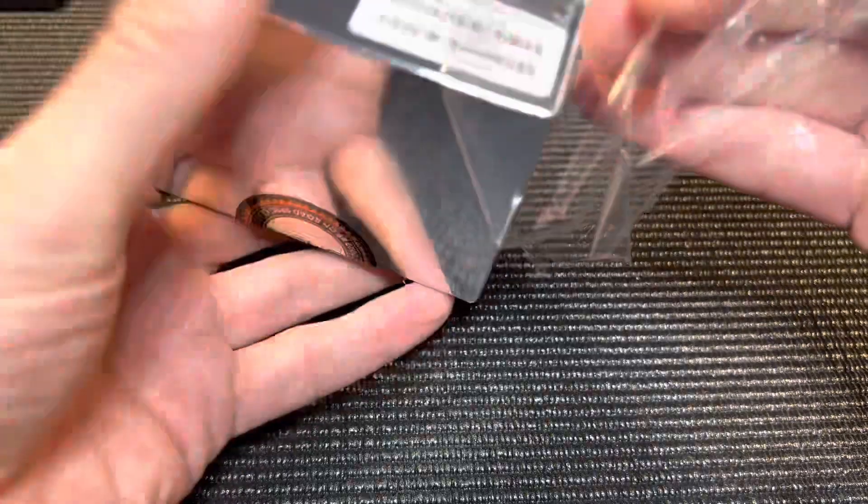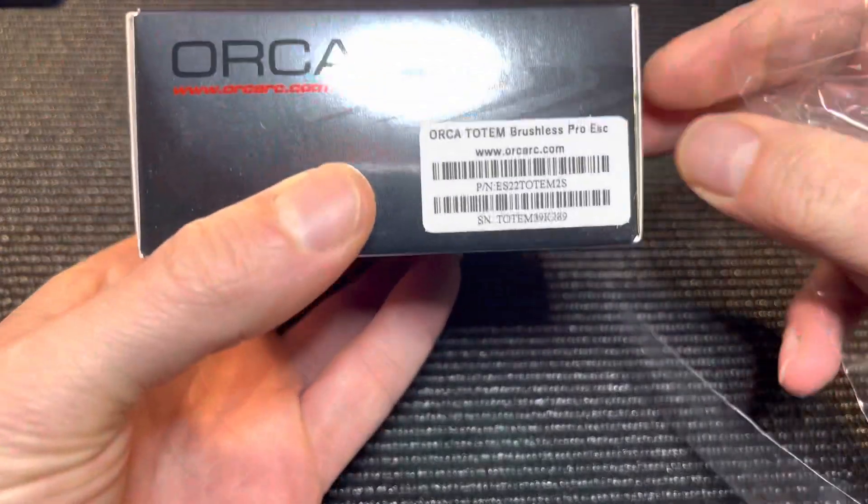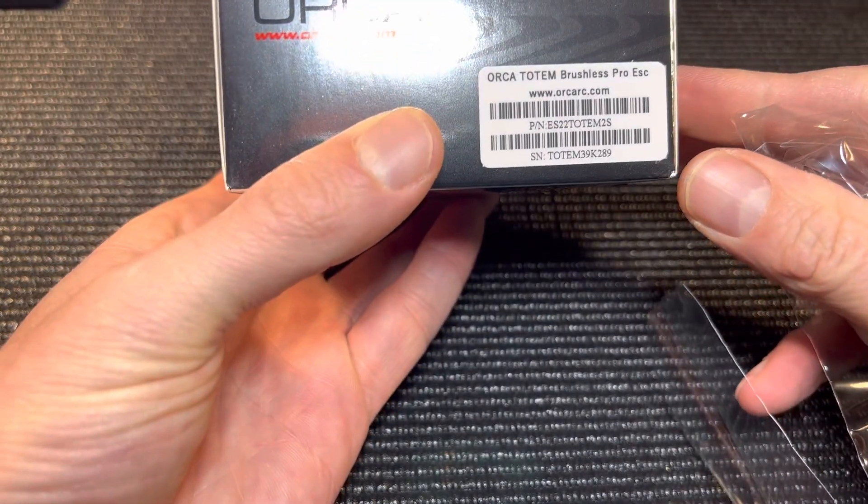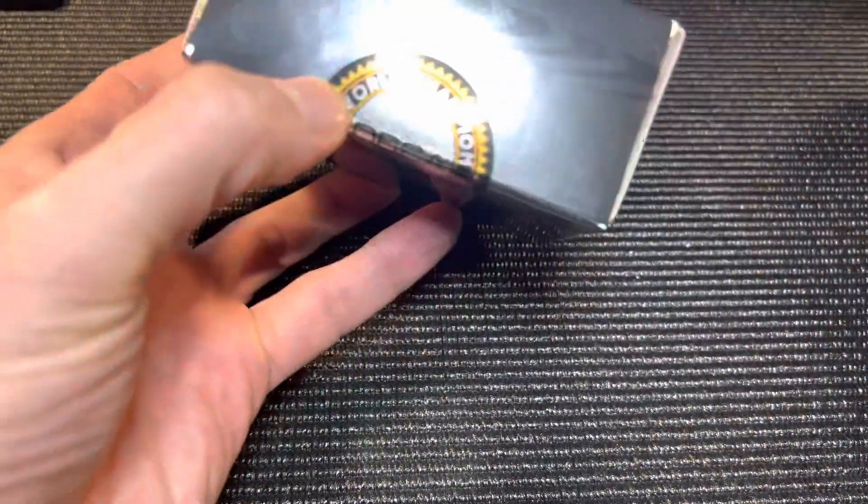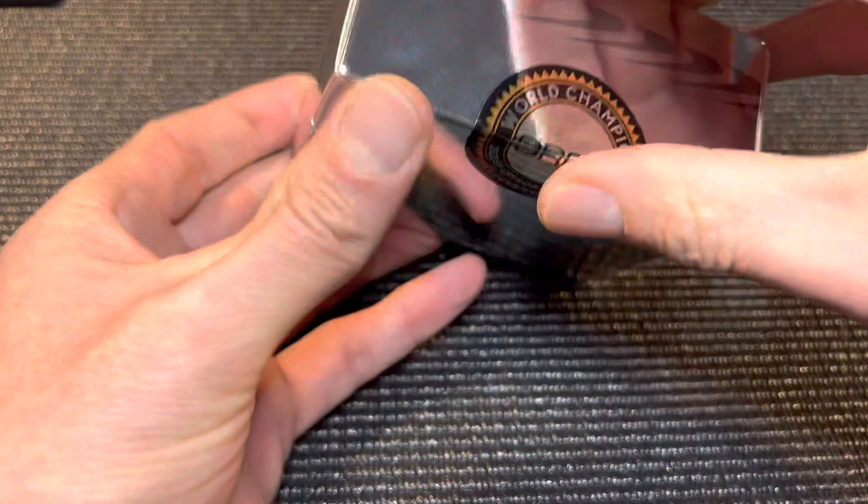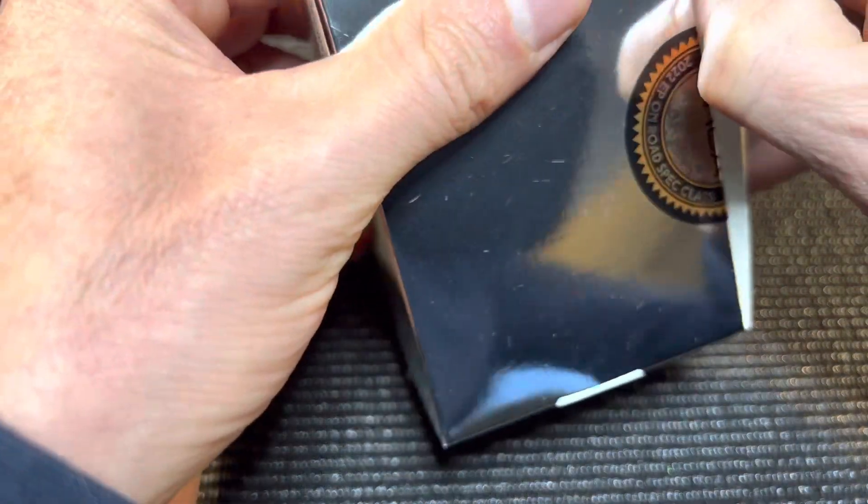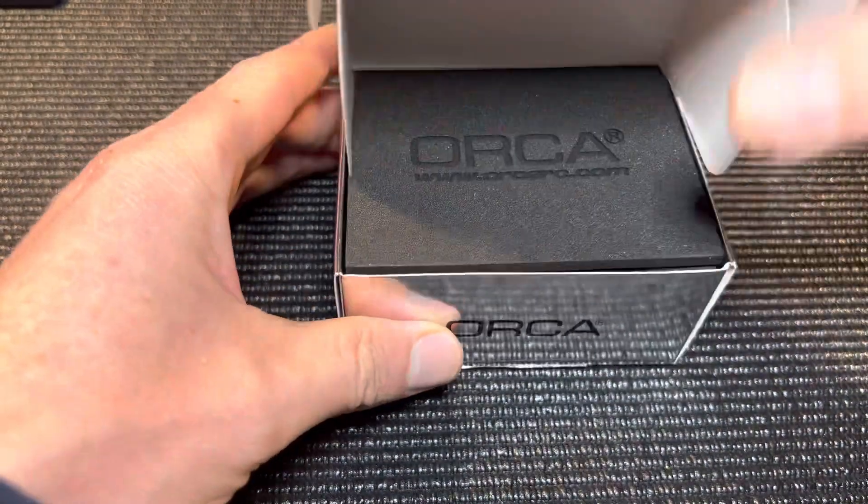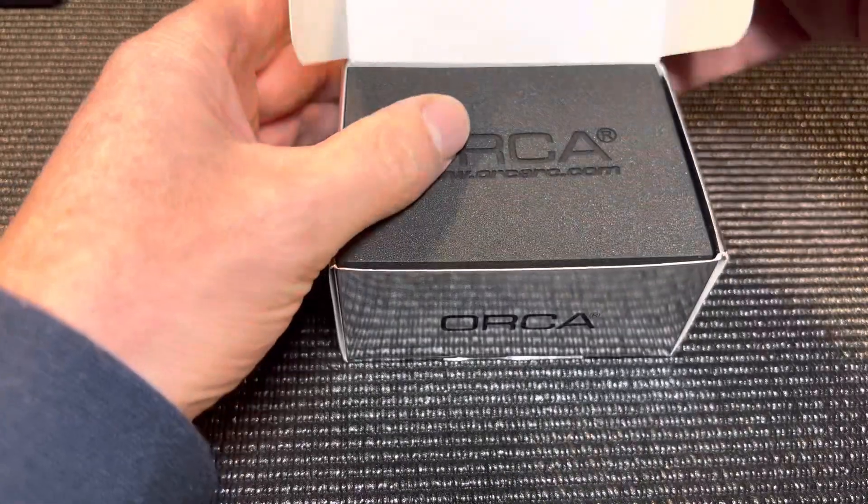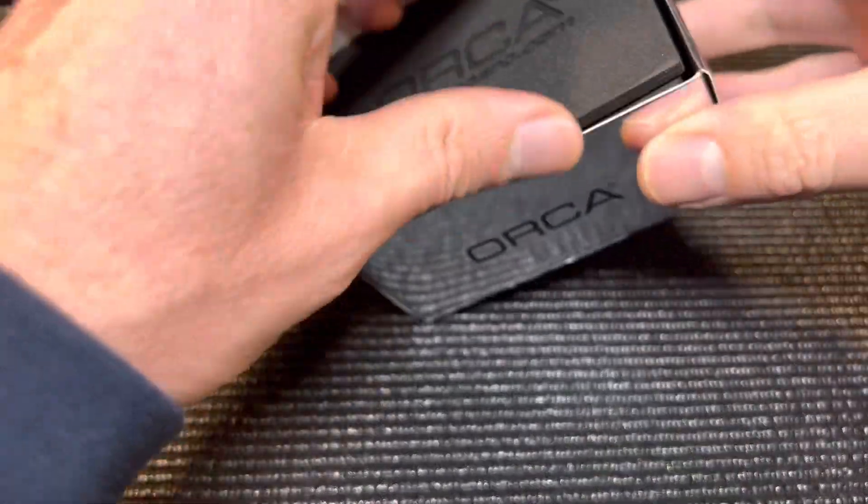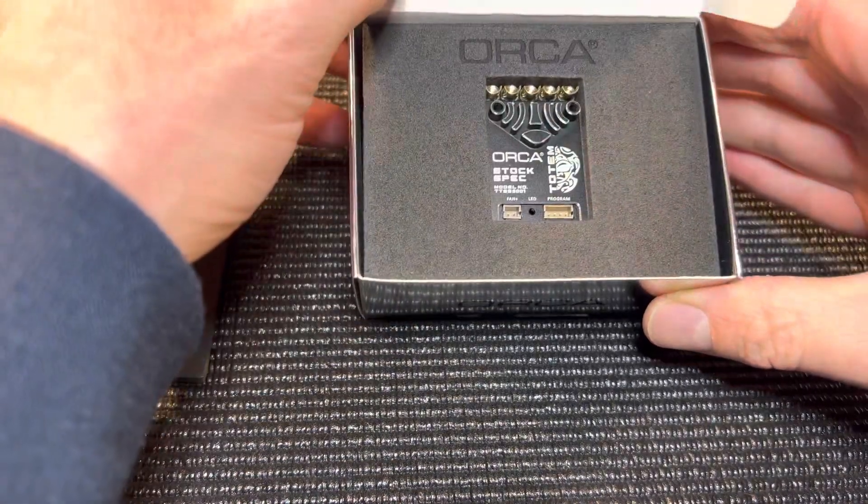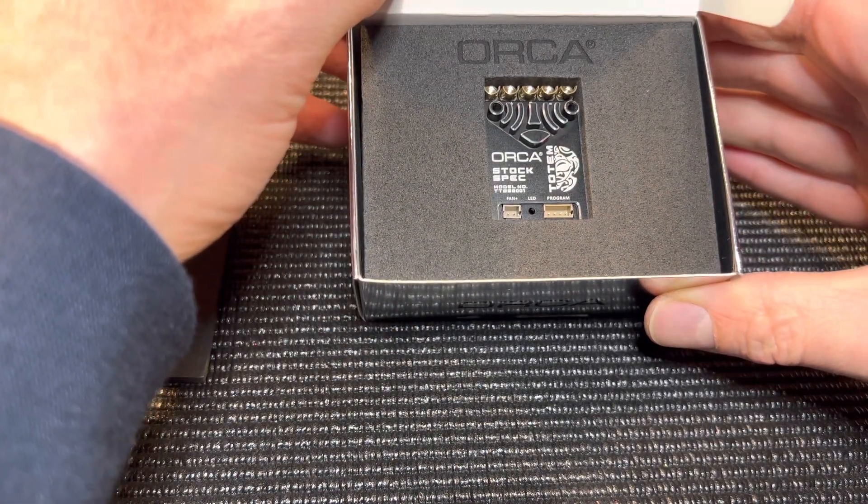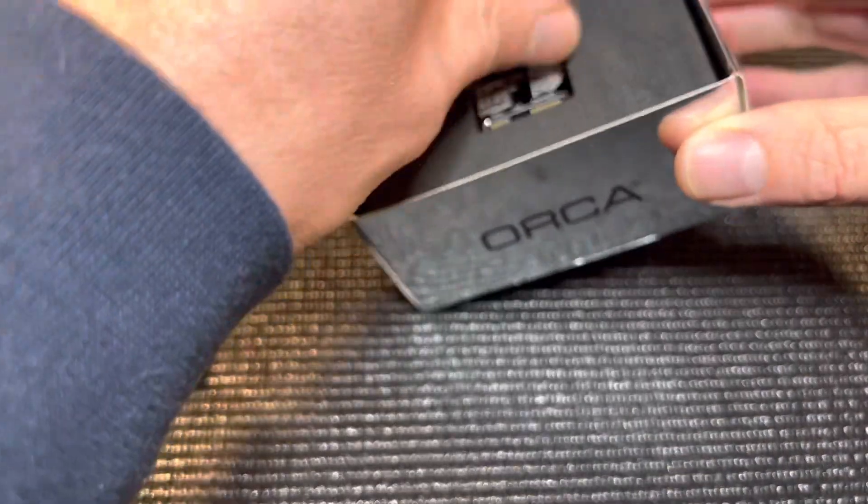You can see the part number here. Obviously I'm not a professional YouTube unboxer. Let's see what's inside. It comes in the typical Orca shiny packaging. There it is, there stock spec.